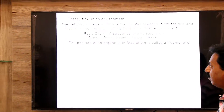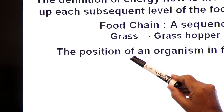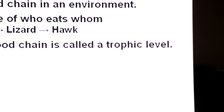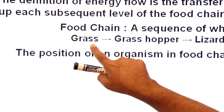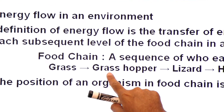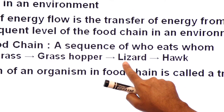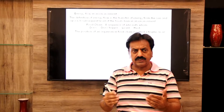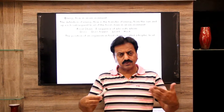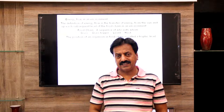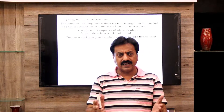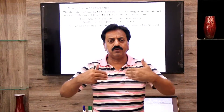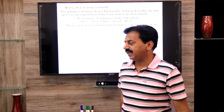Now what is a trophic level? The position of an organism in a food chain is called its trophic level. In this food chain, grass is at the first trophic level, grasshopper is at the second trophic level, lizard is at the third trophic level, and hawk is at the fourth trophic level. Now we will look at an example diagram of how energy flows from the sun into the ecosystem and from producers to primary consumers and then to the next level of consumers.